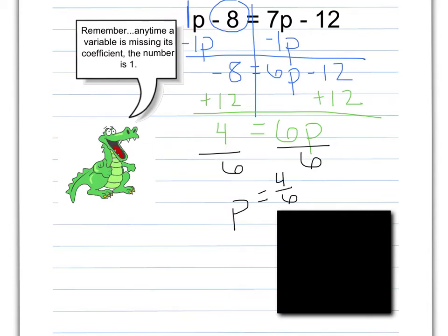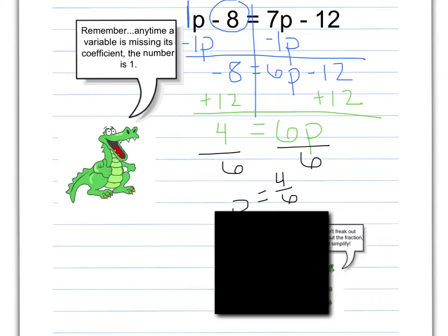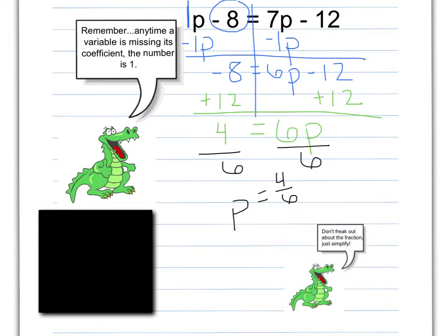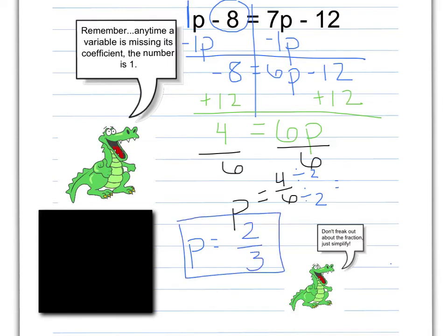My final step is to get P by itself, so I'm going to divide by 6. P is equal to 4/6. Now Allie has another little reminder: don't freak out about the fraction — just simplify. A lot of times kids see the fraction and think they did something wrong. But if you went through all the steps correctly, once in a while you will get a fraction, and that's fine. I can divide both numbers by 2, giving me 2/3. So P is equal to 2/3.